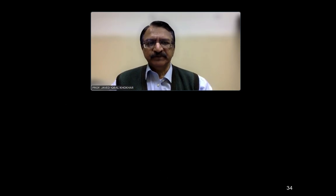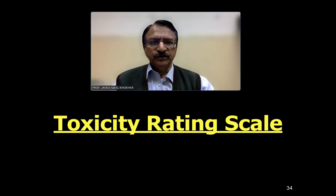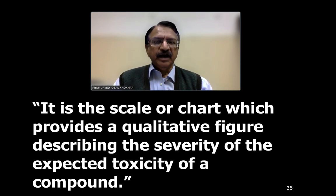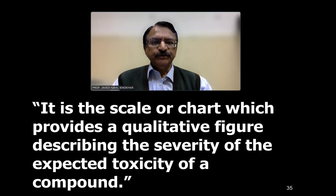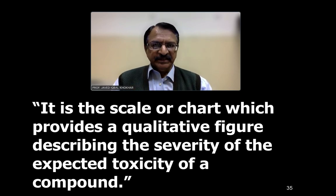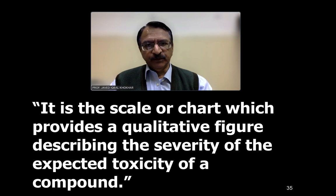That critical concentration is called the toxic value, and this is determined by experimentation. From this we determine toxicity rating scales — scales which determine how much dose is required to produce toxic symptoms. For a particular chemical, the toxicity rating scale is a chart that provides a qualitative figure describing the severity of the expected toxicity of that compound, telling us about the toxic dose at which it produces toxicity.